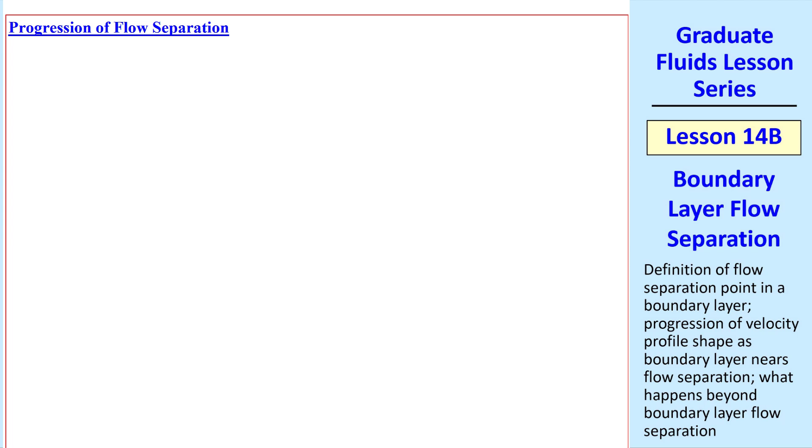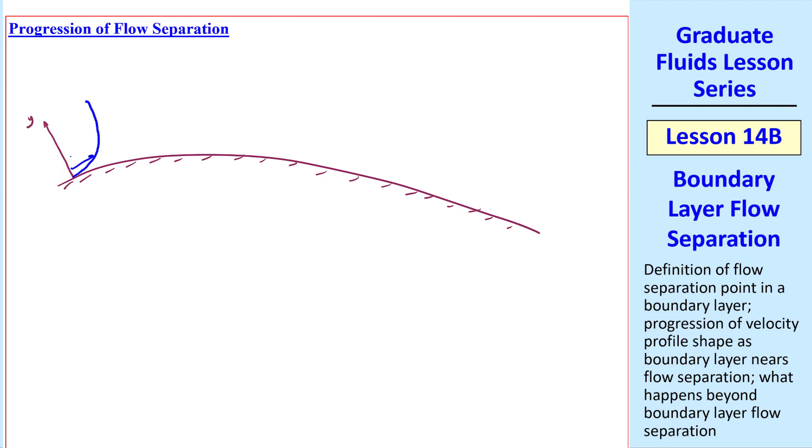Let's look at the progression of flow separation, where we consider a wall like this, with flow from left to right as usual. In this region of the flow, we'll have a favorable pressure gradient, with a large slope at the wall, and a large tau w. This is favorable because u is increasing, and pressure is decreasing. Somewhere near the top, we have a 0 pressure gradient case, with a smaller slope, and a smaller tau w.